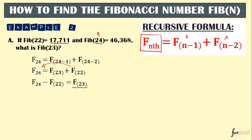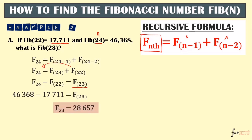So F23 = F24 - F22, where F24 = 46,368 and F22 = 17,711. We subtract them to get F23. Therefore, the answer is 28,657 — that is the 23rd term in our Fibonacci sequence.